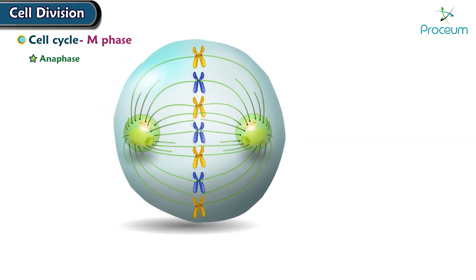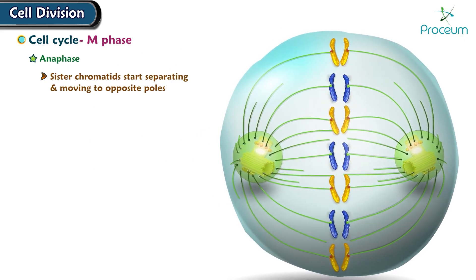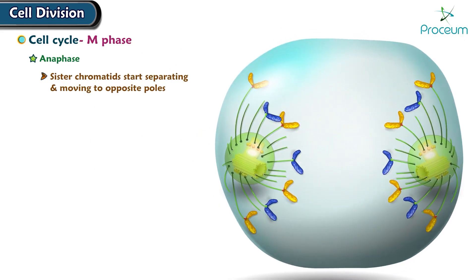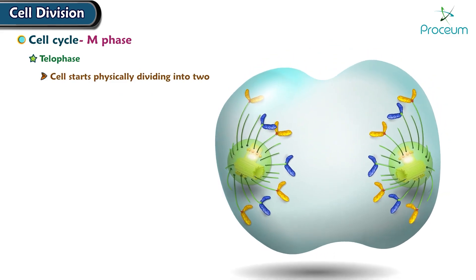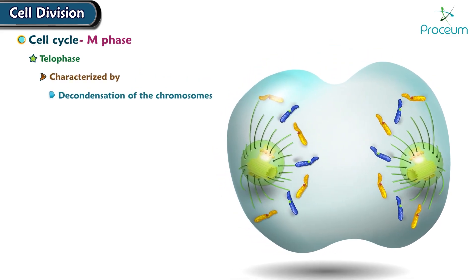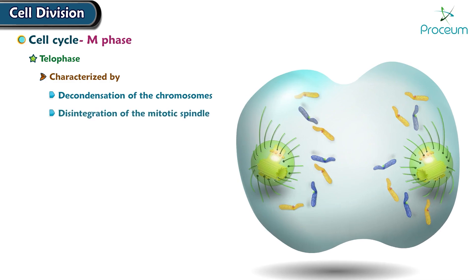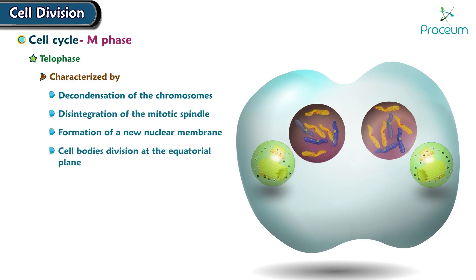Stage 3 — Anaphase: In anaphase, the sister chromatids start separating and moving to opposite poles of the cell. Stage 4 — Telophase: In telophase, the cell starts physically dividing into two. It is characterized by decondensation of the chromosomes, disintegration of the mitotic spindle, formation of a new nuclear membrane, division of cell bodies at the equatorial plane, and ribosomal RNA synthesis.